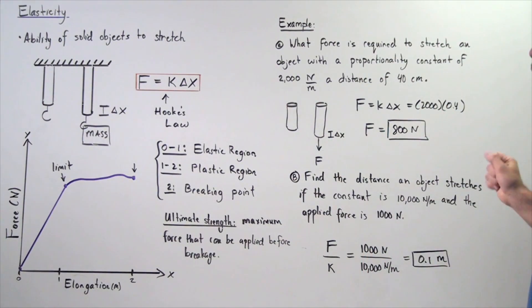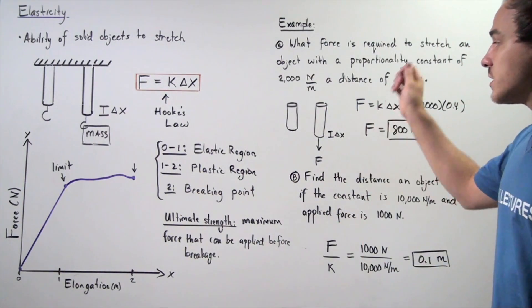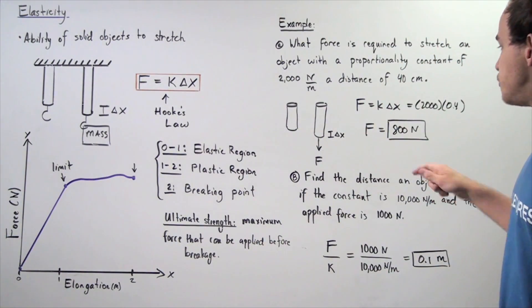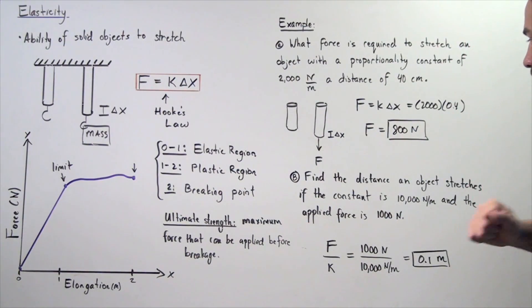Now, we want to calculate what the force is, knowing that it displaces a distance of 0.4 meters. So, we take 0.4, we multiply by our constant 2,000, and we get 800 newtons. So, the force applied on our solid object is 800 newtons. Let's move on to part B.